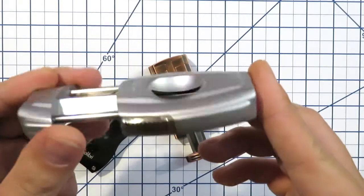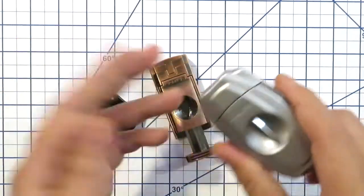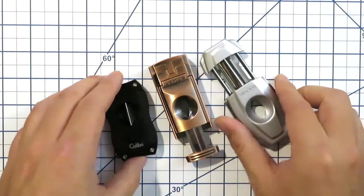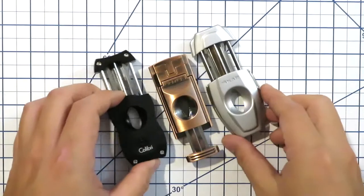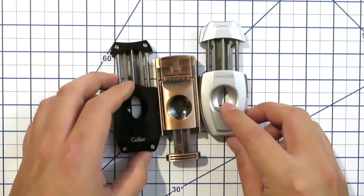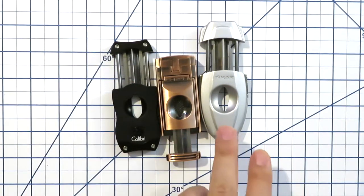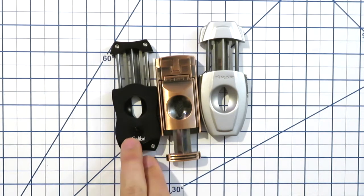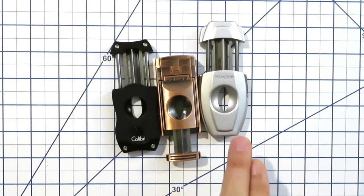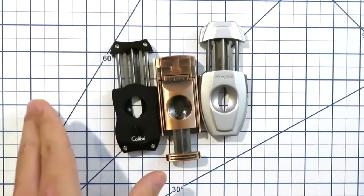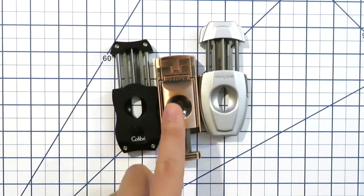But we can see about both of these V cutters, the size or gauge or thickness of the cigar. Both the Calibri and the Xikar give you a little bit more surface area here for your bigger cigars.